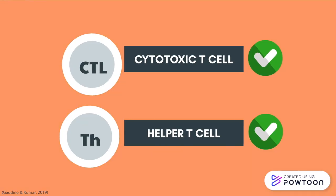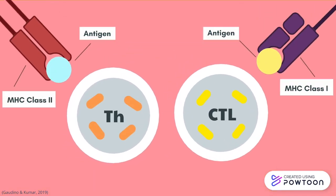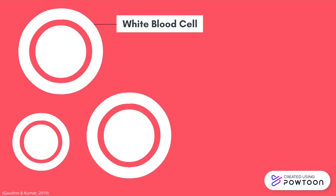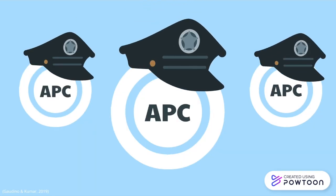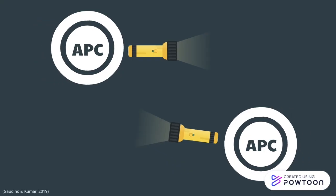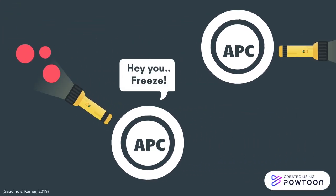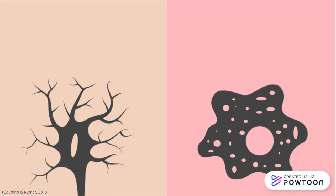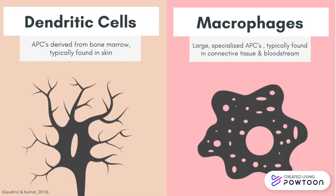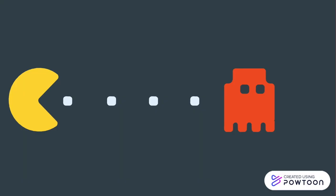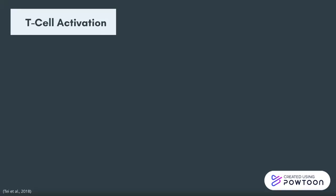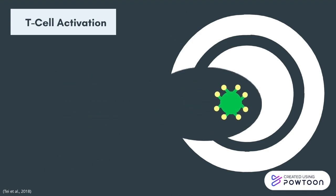T-cells are activated by the antigens they encounter in a two-signal process. First, there's a class of white blood cells called antigen-presenting cells, or APCs. APCs are like the security guards of the human body — conducting constant surveillance and detecting any foreign invaders. Two of the most common APCs are dendritic cells and macrophages, which are phagocytic cells that engulf foreign particles, sort of like a Pac-Man security guard.